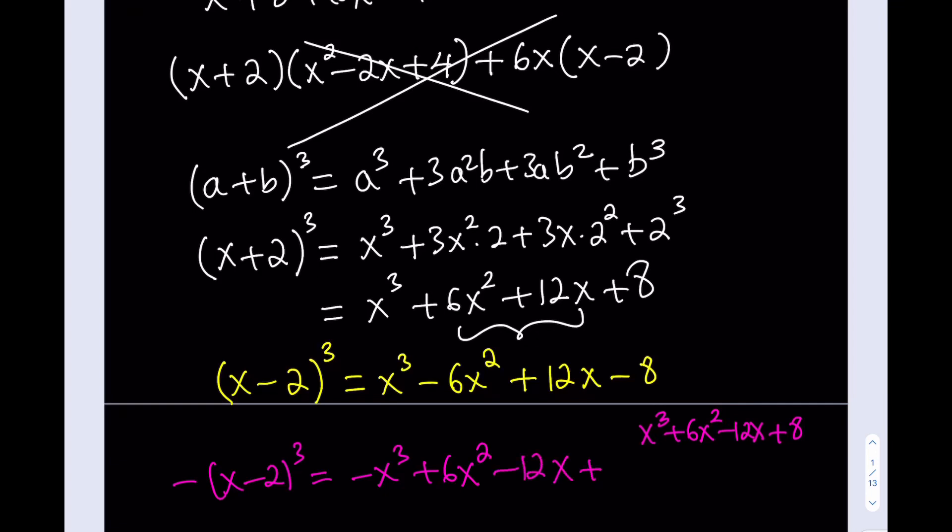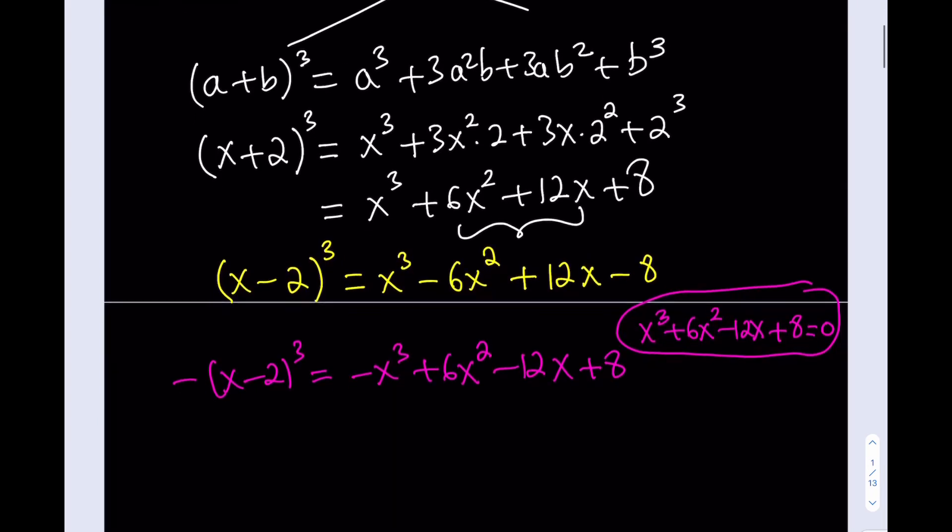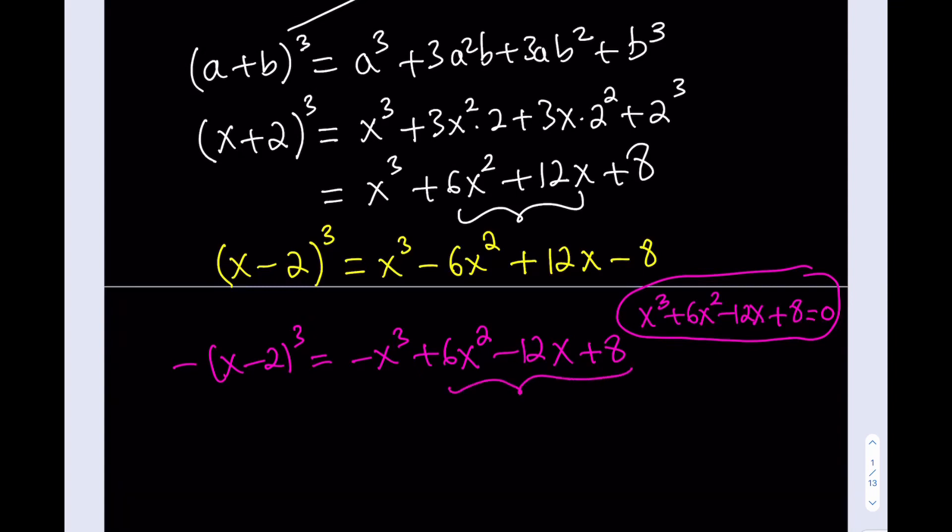So pretty close to what we need, right? We need this expression x cubed plus 6x squared minus 12x plus 8. We know that this equals 0. So I'm pretty close. But how can I do this? Well, everything matches up except for negative x cubed. Wouldn't that be nice if that negative x cubed was magically replaced by positive x cubed? And we can do that. You don't need magic, you need mathemagic.